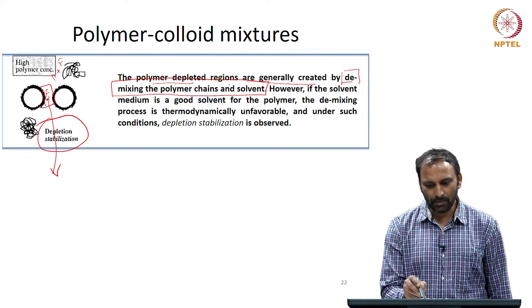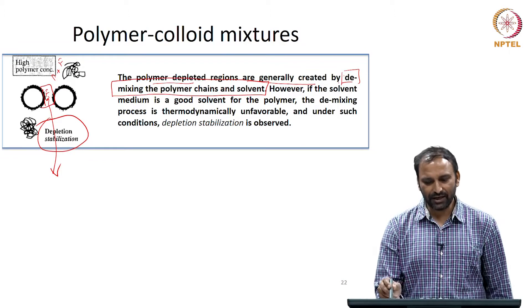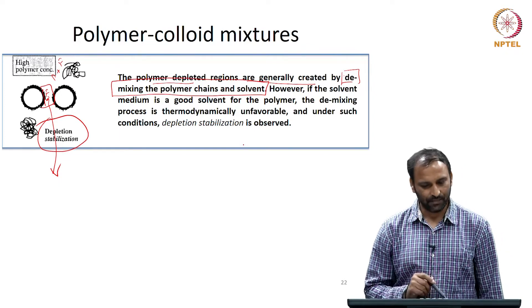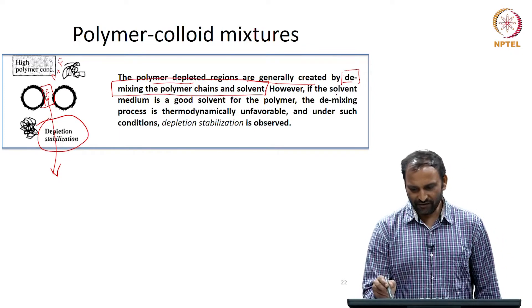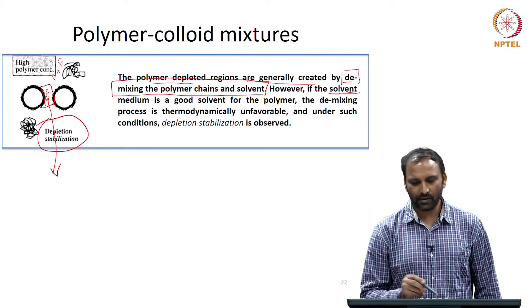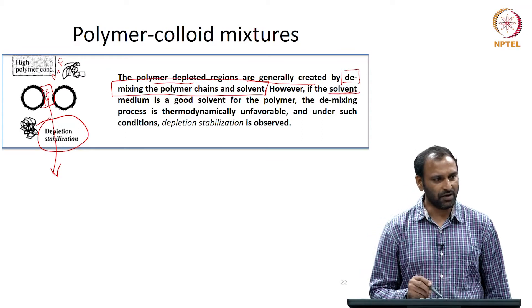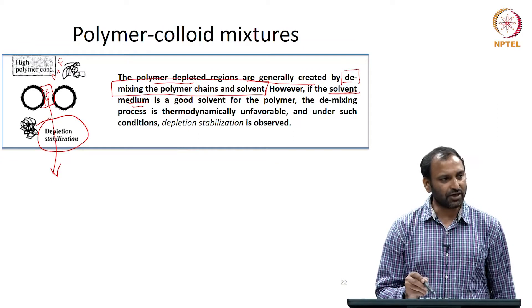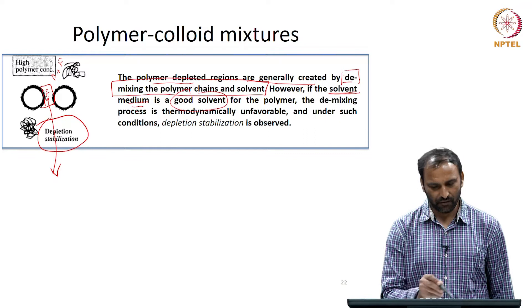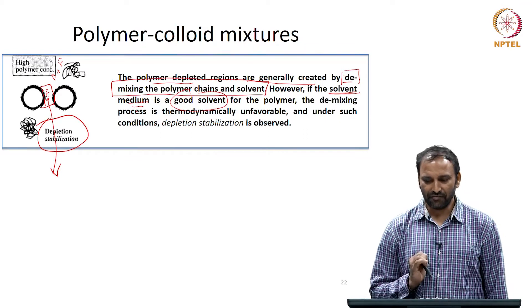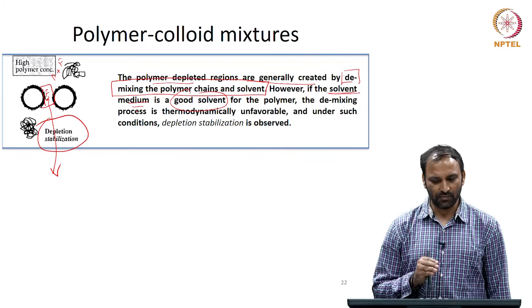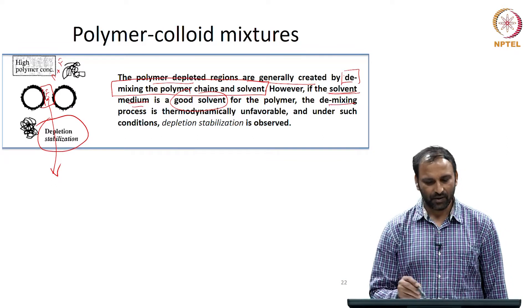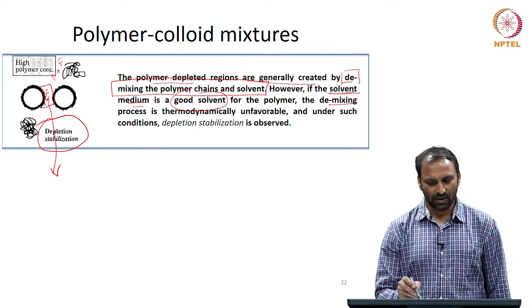Therefore, the polymer depleted regions are generally created by demixing of polymer chains and the solvent. However, if the solvent medium is such that it is a good solvent for the polymer — that means if there is a favorable interaction between the solvent and the polymer — this demixing process becomes unfavorable.